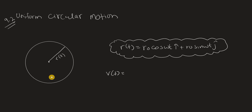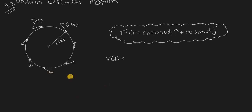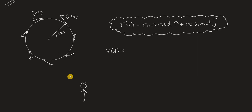First, let me explain what the velocity is here. The particle is moving in a circle, so its speed is always constant. However, the direction of velocity keeps changing as the particle moves along the circle. The velocity is always tangential to the circle — perpendicular to the radius.